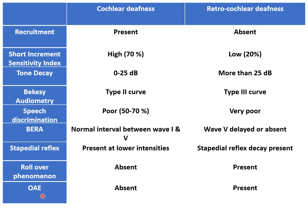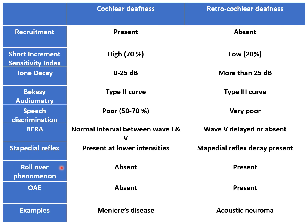Otoacoustic emissions are produced by the outer hair cells of the cochlea. If there is any pathology in the cochlea, otoacoustic emissions will be absent, while they are present in retro-cochlear pathologies. A classical example of cochlear pathology is Meniere's disease, and a classical example of retro-cochlear pathology is acoustic neuroma. These are the different special tests for hearing by which we can differentiate cochlear pathology from retro-cochlear pathology. Thank you.